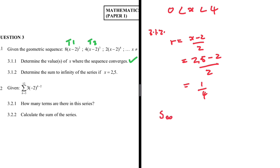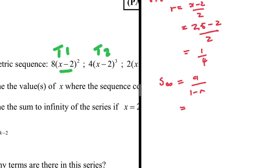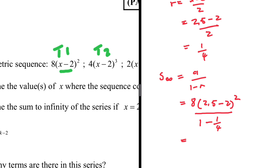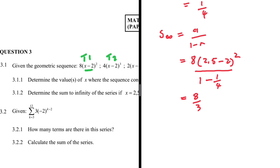The sum to infinity equals a divided by (1 minus r). We find a using t1 = 8 multiplied by (2.5 minus 2) squared. So the sum to infinity is 8 times (0.5 squared) divided by (1 minus 1/4). Calculating gives 8 over 3, so the sum to infinity is 8/3.